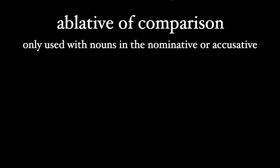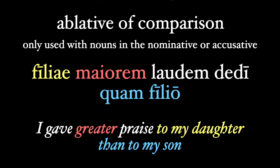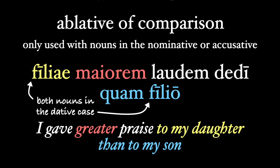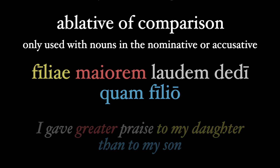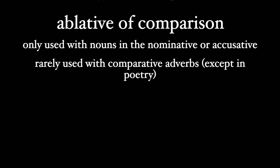The ablative of comparison can only be used when the noun it's compared to is in the nominative or accusative case. If we want to say something like 'I gave greater praise to my daughter than to my son', we need to use 'quam': 'filiae maiorem laudem dedi quam filio'. Note that the two nouns we're comparing are in the same case — the dative — and this is a must when using 'quam'. The comparative adverb 'too' is also commonly followed by 'quam' rather than the ablative of comparison, although poets break all the rules.